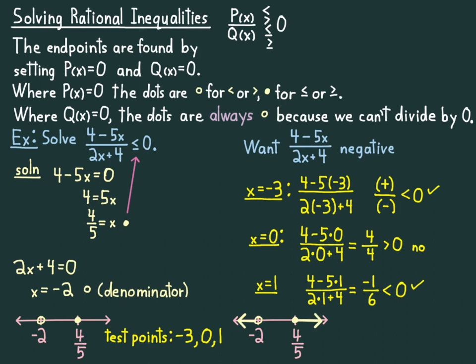So I want to fill in those two regions: the one containing -3, which is this one over here, and the one containing 1, which is this interval here, because these are the two that worked. I checked them. In interval notation: (-∞, -2) union [4/5, ∞). Remember, infinity always gets a parenthesis. And that's that for that section.